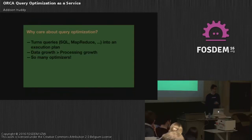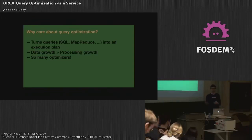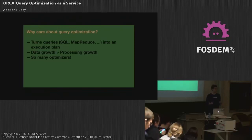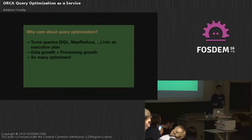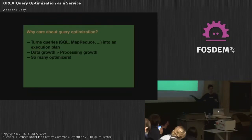Historically, every database ships with its own optimizer. If you think about IBM, they have like 16 optimizers, which is a lot of overhead to maintain. Inside a database there's a lot of technical debt in these components — they're very complex and hard to maintain.